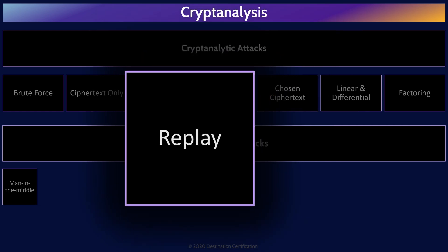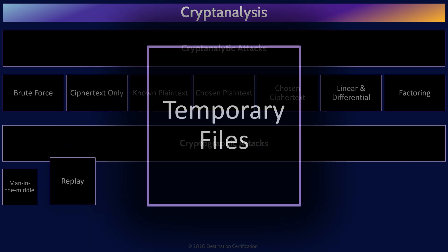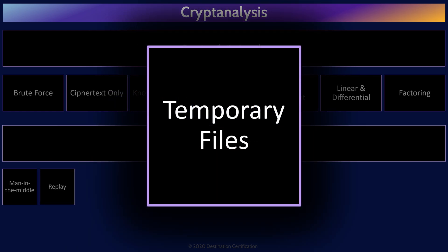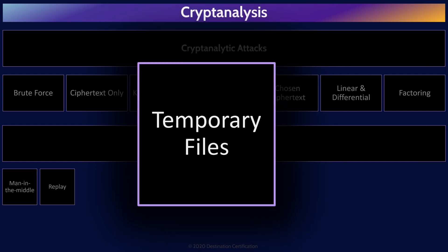When a cryptosystem is encrypting and decrypting data, temporary files are often used to temporarily store plaintext, ciphertext, and encryption keys. These temporary files may not be sufficiently secured, and thus in a temporary file attack, the attacker gains access to sensitive plaintext or encryption keys by accessing these temporary files.